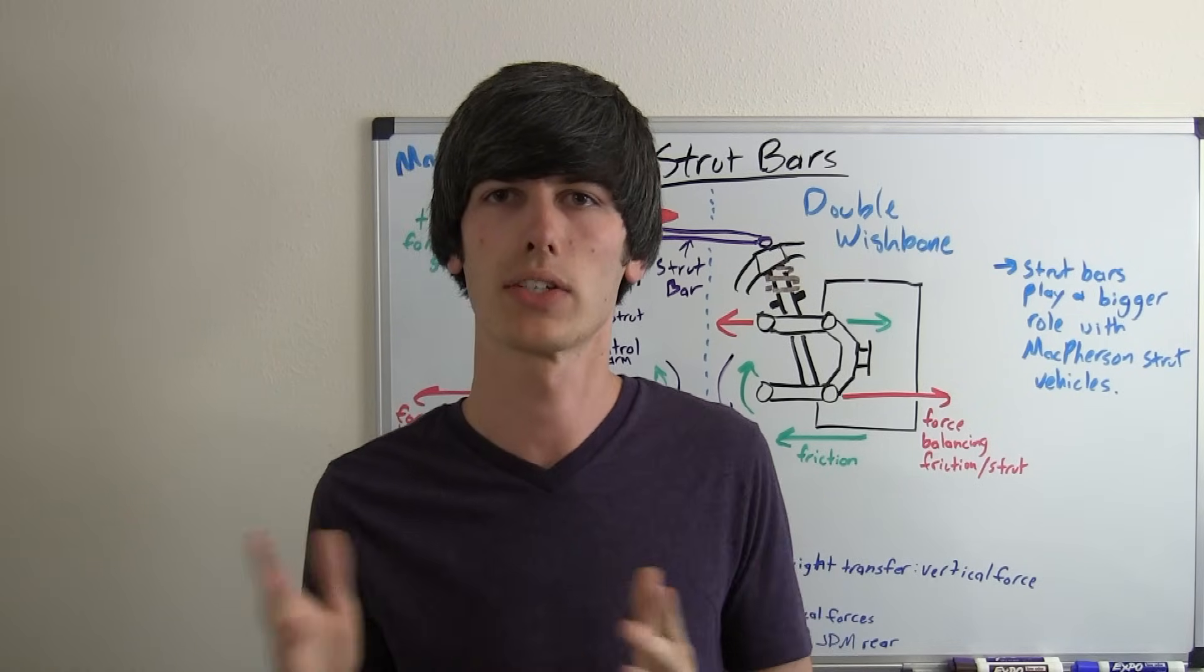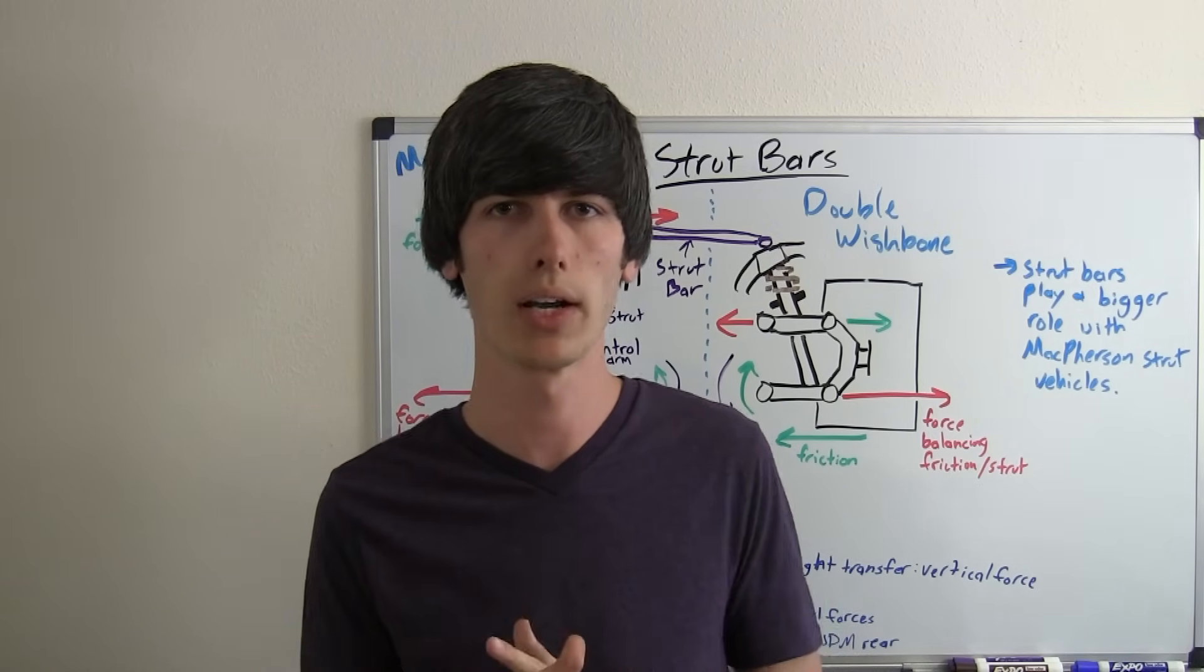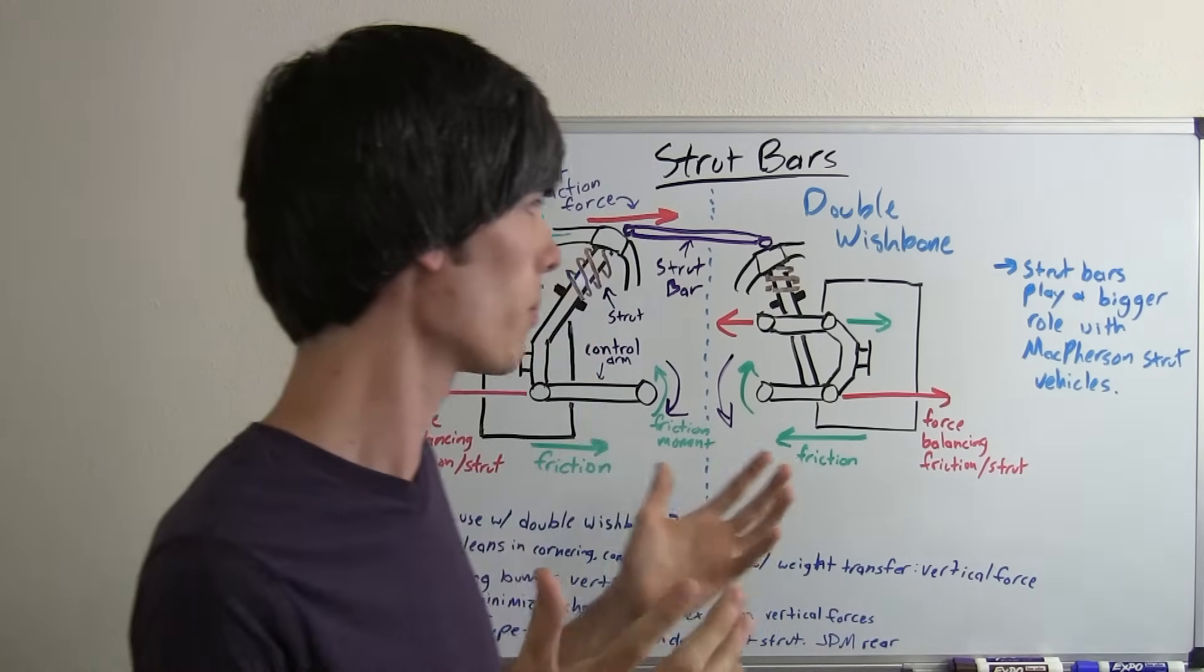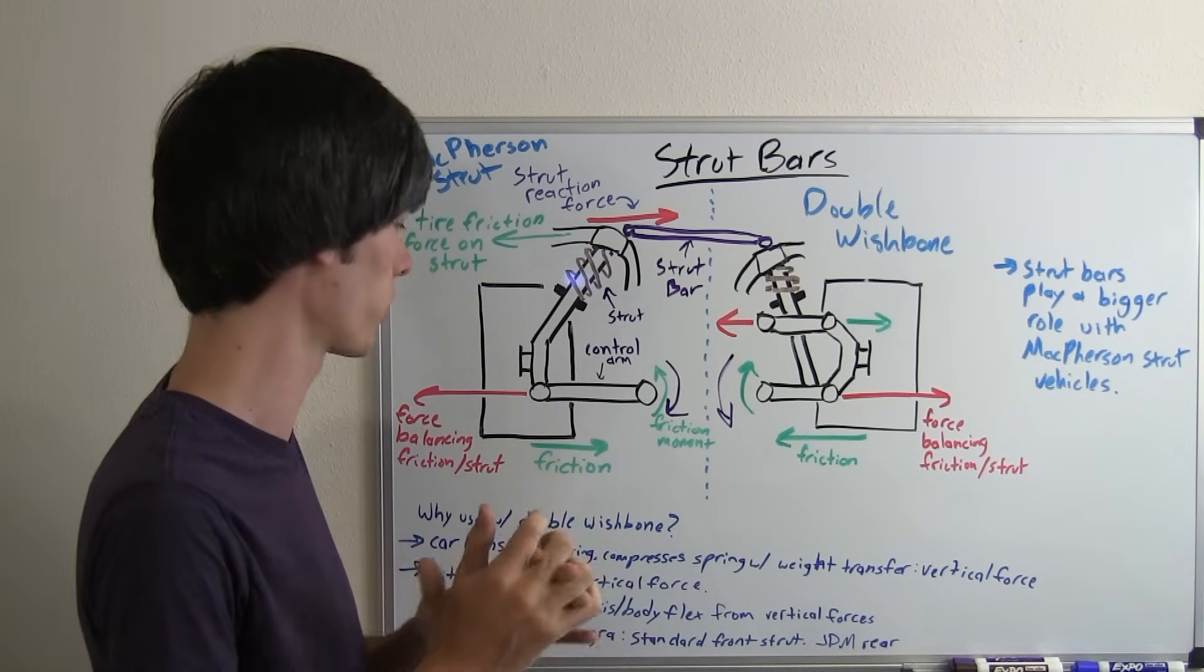However the GSR or the type R Integra do come with a strut bar even though it's a double wishbone suspension. So why might you want a strut bar even if you do have a double wishbone suspension?